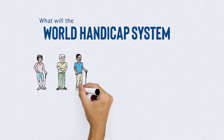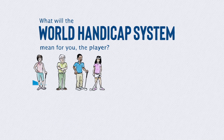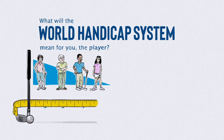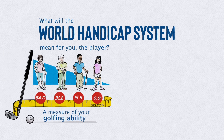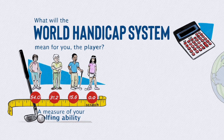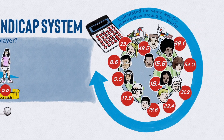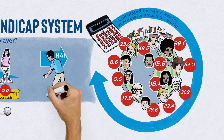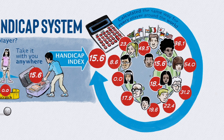What will the World Handicap System mean for you, the player? It all starts with a measure of your golfing ability, calculated the same way for every player around the world — a handicap index that you can take with you anywhere and use at whatever course you're playing.